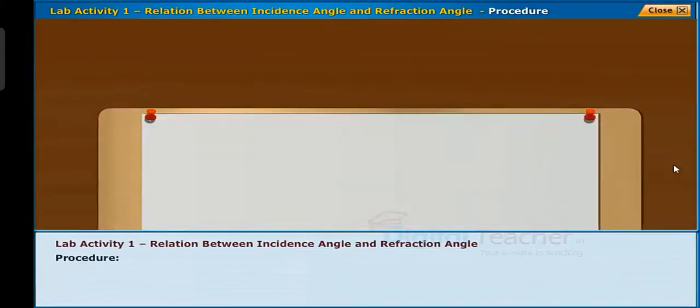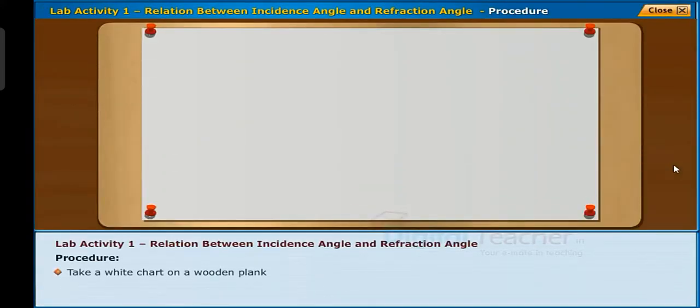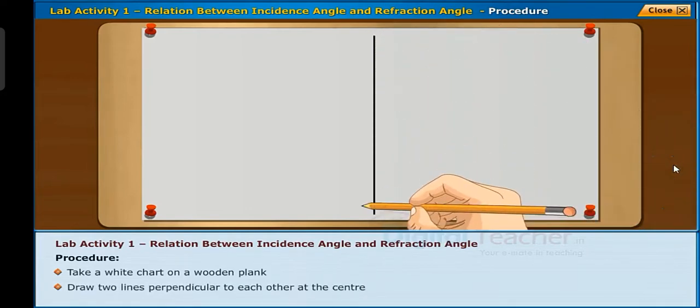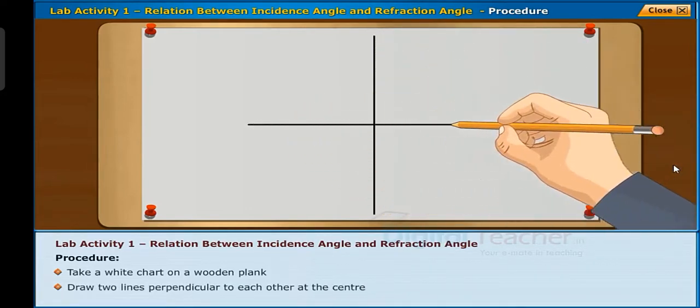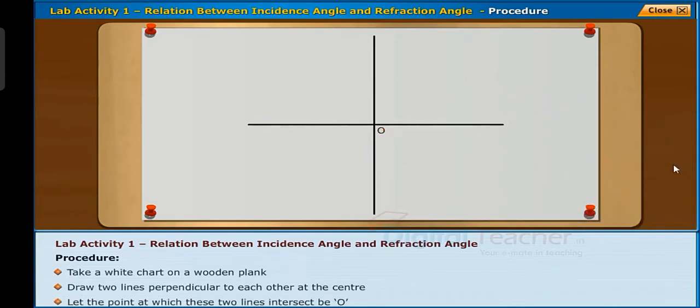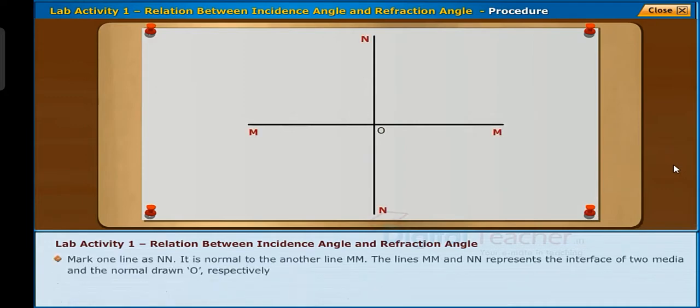Let us follow the procedure. Take a white chart on a wooden plank. Draw two lines perpendicular to each other at the center. Let the point at which these two lines intersect be O.